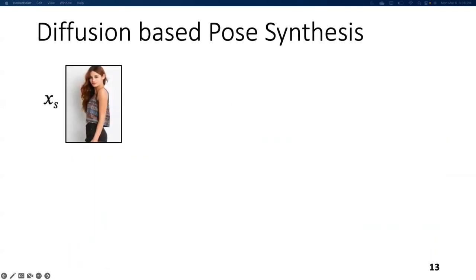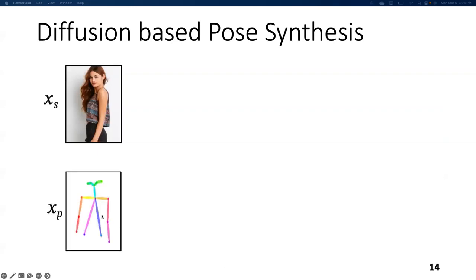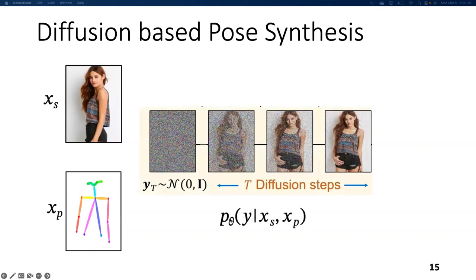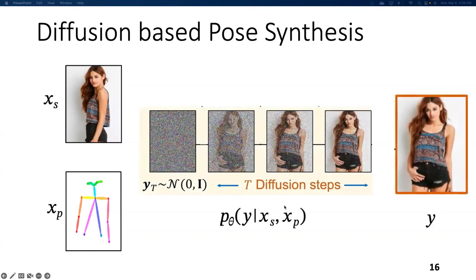Now coming to the diffusion-based pose synthesis: we take image XS having a specific style, that is appearance, and we also take a target pose XP as input. We train a conditional diffusion model P-theta to produce the desired output. The generation process is divided into several conditional denoising diffusion steps, where each step becomes relatively simple to model and leads to better output.